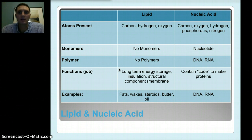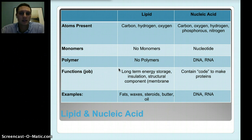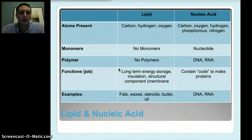Lastly, nucleic acids are made of carbon, oxygen, hydrogen, phosphorus, and nitrogen — quite a few more elements than the other macromolecules. Their monomers are nucleotides, which we talked about during our DNA unit. Nucleotides put together can make DNA or RNA, depending on whether they're DNA or RNA nucleotides. Their function is really the instructions to make proteins, as we discussed. Examples are DNA and RNA. We'll look at these four different types of macromolecules in more detail in coming videos and lessons, as well as the labs we do to examine them more specifically.